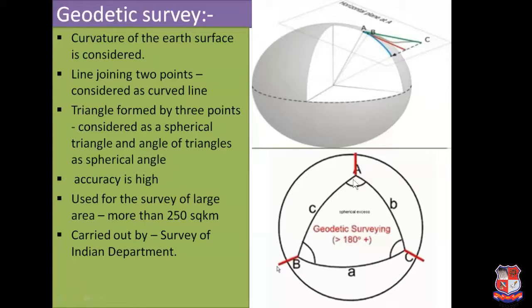The triangle formed by joining the three points A, B, and C is considered a spherical triangle, and the angles of this spherical triangle are considered spherical angles. The accuracy of geodetic surveying is very high, and it is used for the survey of large areas — generally when the survey area is more than 250 square kilometers. It is carried out by the Survey of India Department, which is an agency of the central government.